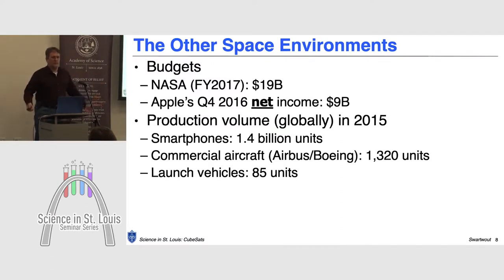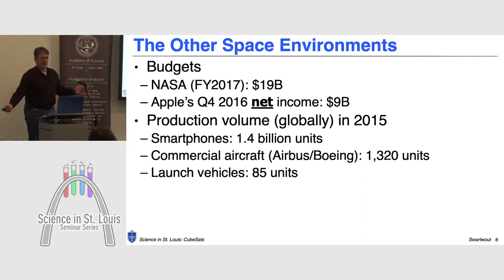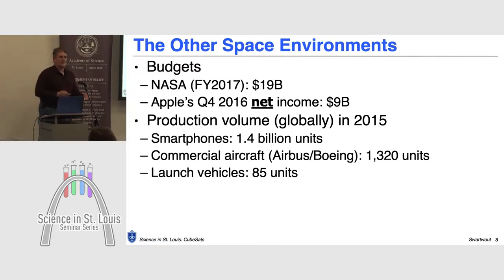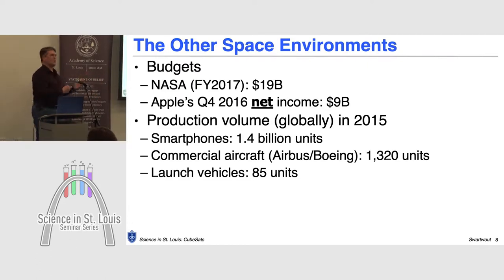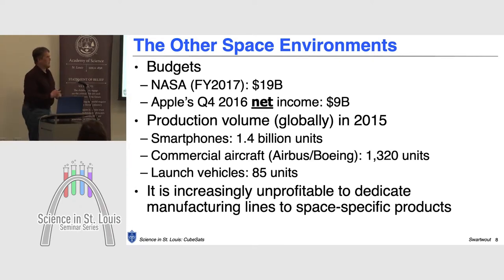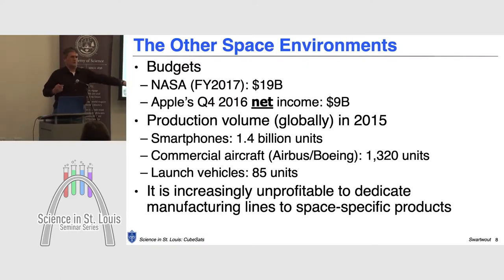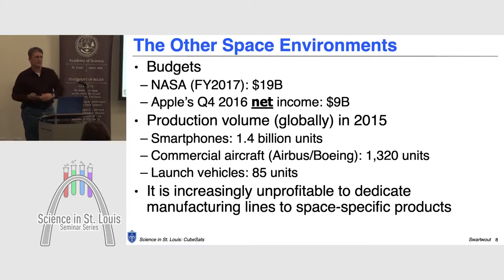Another way to look at it is how many of these things are being made. In 2015, there were 1.4 billion smartphones produced in that year alone, compared to 1,300 wide-body jets by Airbus or Boeing, and there were only 85 rockets launched for the entire world. The point is: in terms of how important these things are in the world economy, it's unprofitable to dedicate manufacturing lines to space-specific products. In the 60s and 70s, the technology push was from space to the rest of your life. Now it's the reverse — from the rest of your life to space. That's the background for understanding CubeSats.